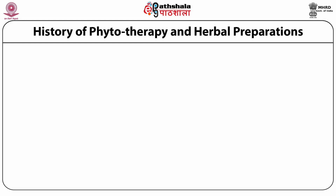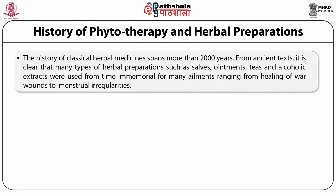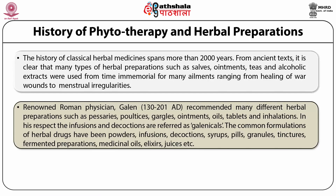Let's now discuss the history of phytotherapy. The history of classical herbal medicines and phytopharmaceuticals spans more than 2000 years. From ancient texts, it is clear that many types of herbal preparations — such as ointments, teas, and alcoholic extracts — have been used from time immemorial for ailments ranging from healing war wounds to menstrual irregularities. The Roman physician Galen made significant contributions in this field, writing exhaustively about preparations like pessaries, poultices, garlic, gargles, ointments, and oils — which are still named after him as galenicals.